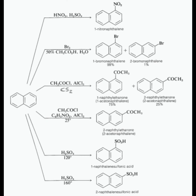The next reaction is halogenation. For example, naphthalene treated with bromine in presence of acetic acid and water gives 1-bromonaphthalene as well as 2-bromonaphthalene. The percentage of 1-bromonaphthalene is 99% whereas 2-bromonaphthalene is just 1%.